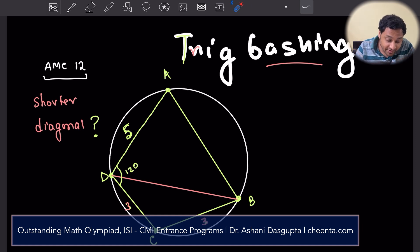So how do we go about it? There are several ways to do this problem. But since we want to learn trig bashing, I will be using mostly trigonometric techniques. So let's, as the first step, let's join the diagonals, both of the diagonals and do a little bit of angle chasing.